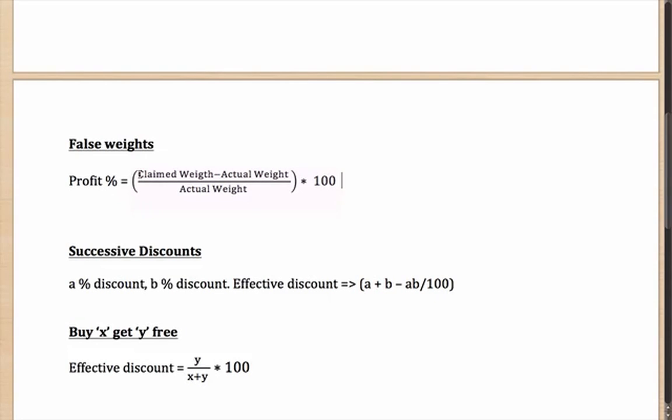What will be his profit? Whatever weight he is claiming (let's say one kilo in this case) minus the actual weight that he is giving you (in this case 960 grams), divided by the actual weight that he is giving you (960 grams) × 100. Whatever that comes out as is going to be the profit made in case he is cheating by using false weights.